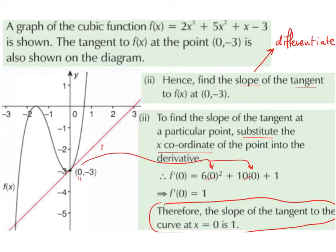Part 2 says, hence, find the slope of the tangent to f(x) at the point (0, -3). So when we see the word slope, we want to think differentiate. So we are trying to find the slope of the tangent, so the slope of the line, to f(x) at the point (0, -3). So this is the point (0, -3), so we are basically trying to find the slope of this straight line.